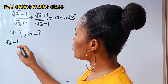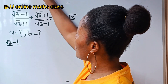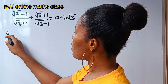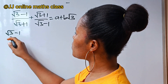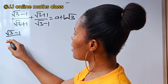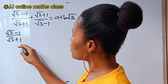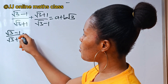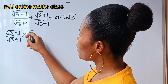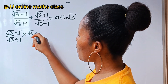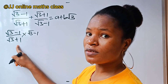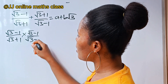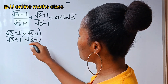So let's go ahead and do that. The question is: root 3 minus 1 divided by root 3 plus 1. We rationalize this by multiplying it by root 3 minus 1 over root 3 minus 1, which is the conjugate of the denominator.